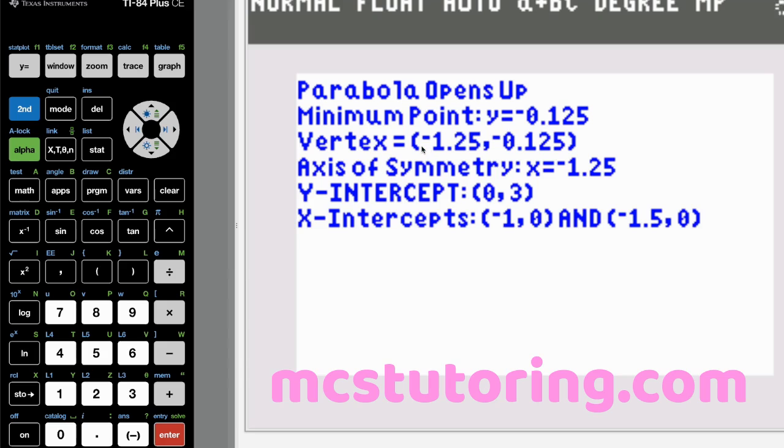We've got the vertex here, x and y coordinates. Axis symmetry, x intercept, x intercepts, and y intercept.